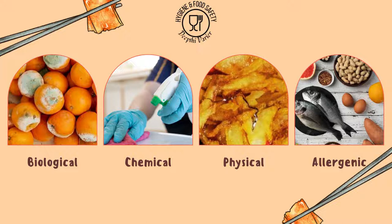Biological contaminants include all the microorganisms which cause food spoilage as well as foodborne diseases. This includes bacteria, fungi, viruses, protozoa, and algae — all organisms known to cause foodborne infections as well as those which cause food spoilage. Biological contaminants also include insects, rodents, and any other critters, bird droppings, and anything in the premises which can bring microorganisms into the food.